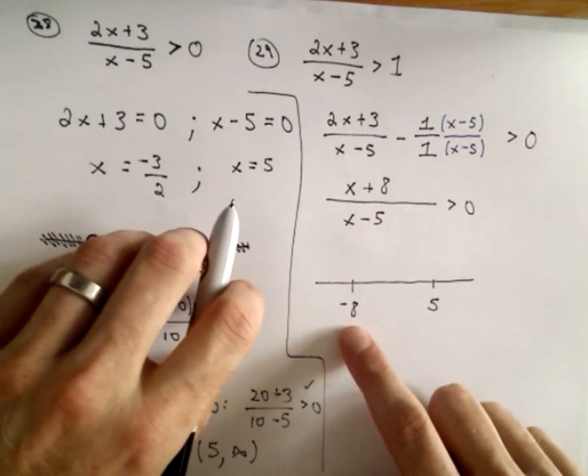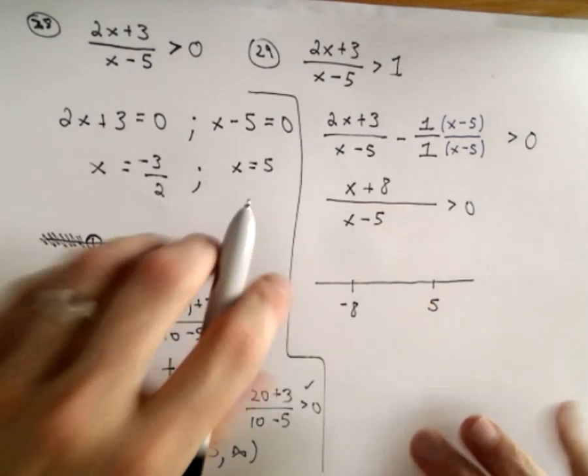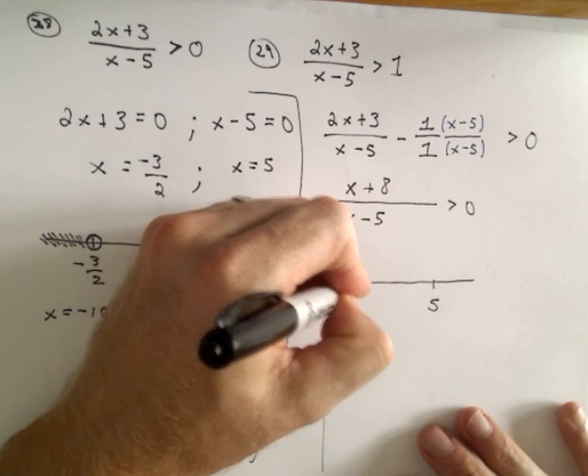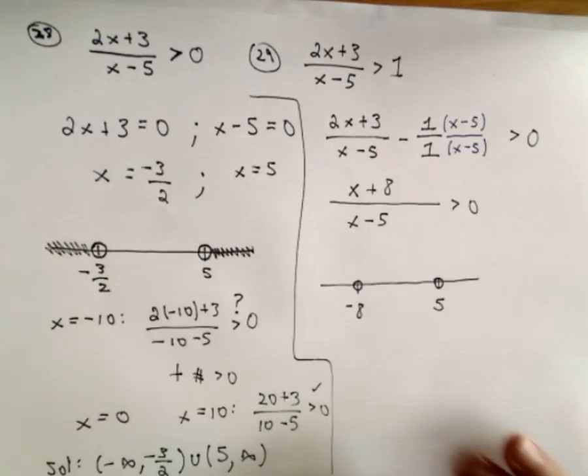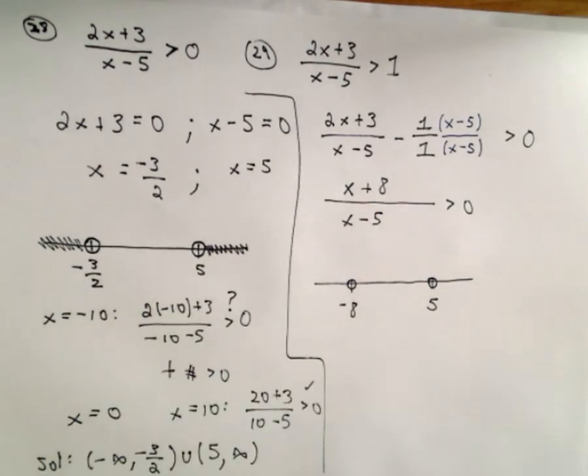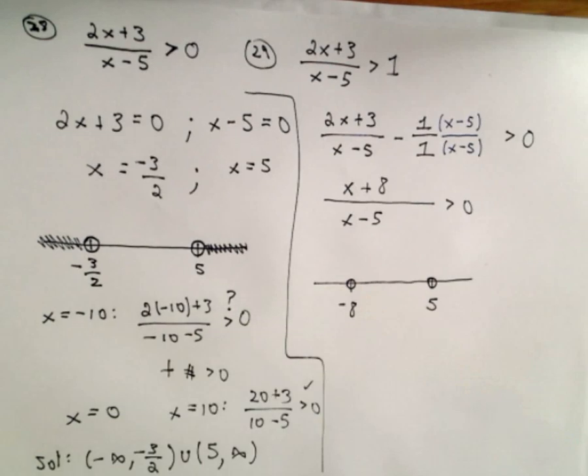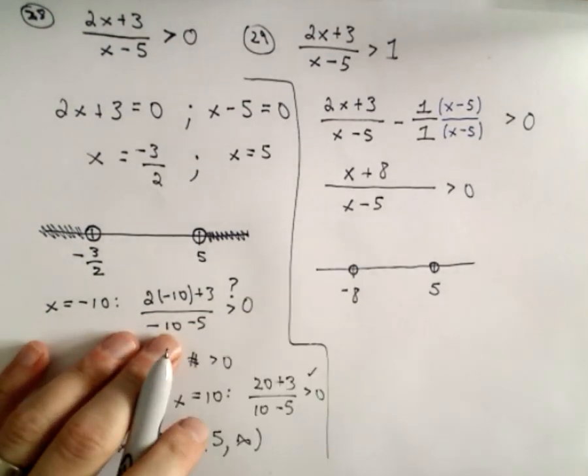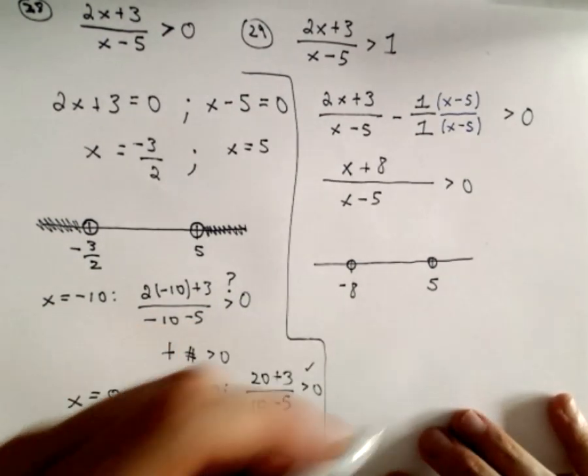So okay, I'm getting negative 8 and 5. Again, neither of those will work. Notice if the inequality was, say, greater than or equal to or less than or equal to, the negative 8 would be a solution in that case, and we would fill it in and use brackets and include it. But again, here we have strictly greater than.